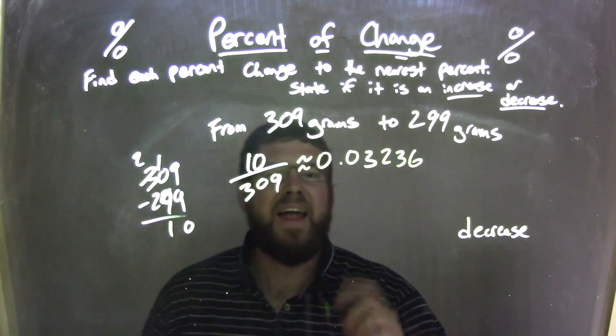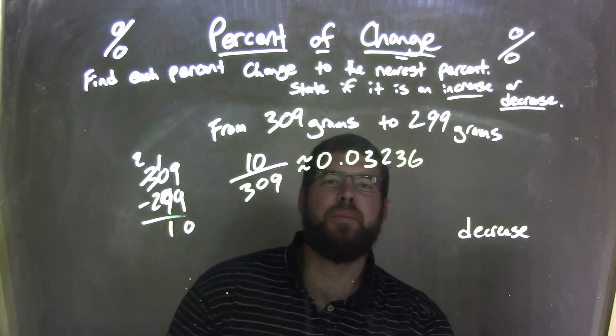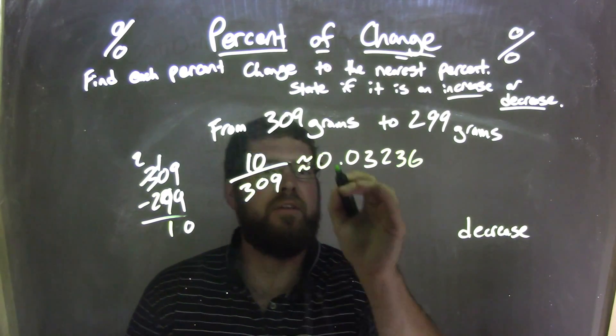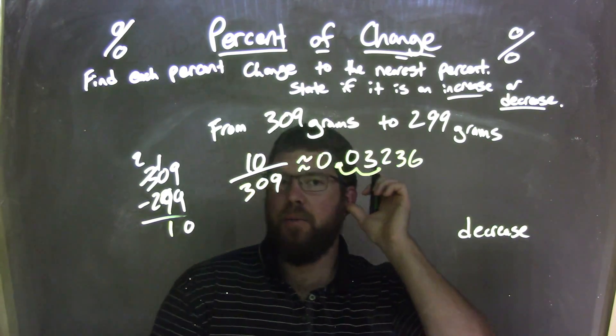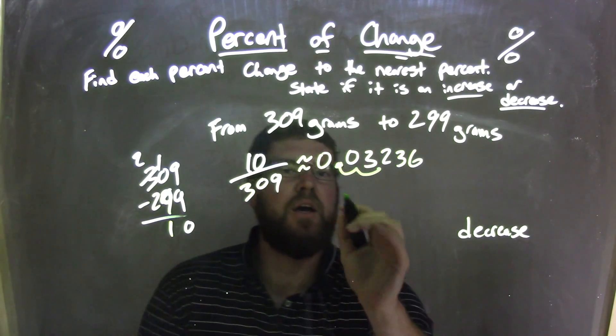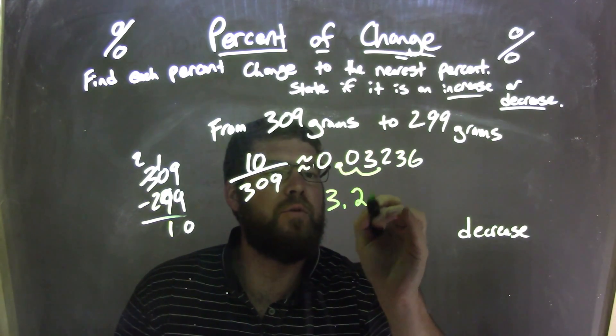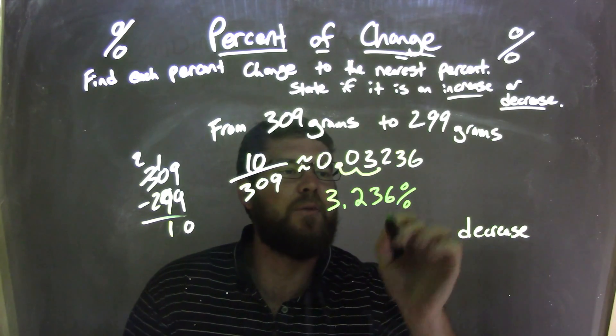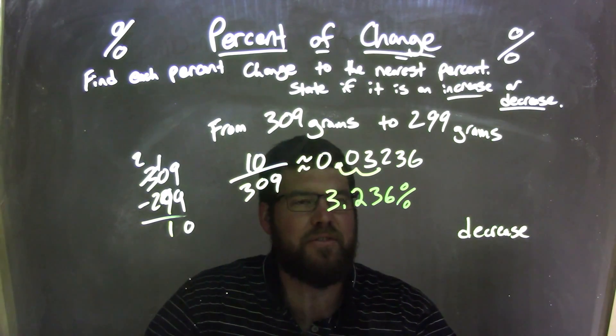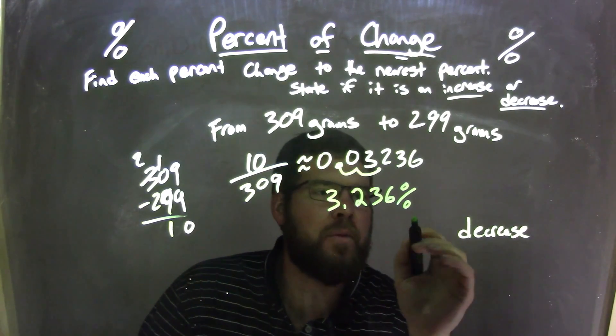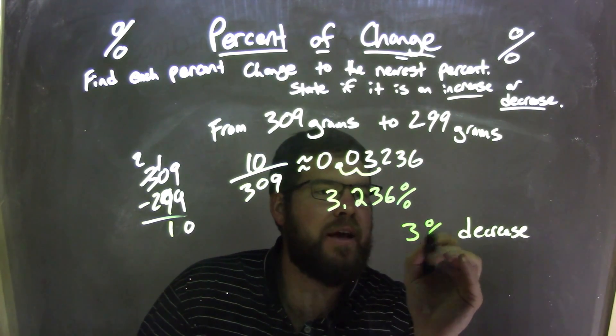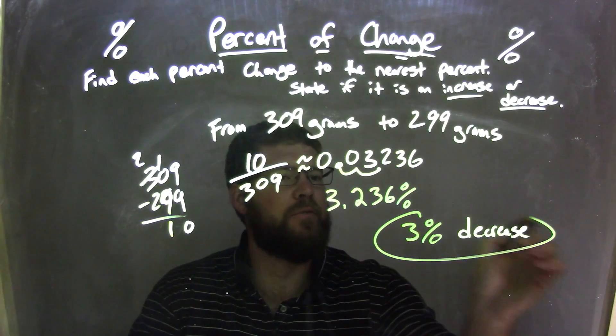Well that I need to convert to a percent. The decimal needs to convert to a percent, so we take that decimal and move it over two units, 1, 2. So now we have 3.236 percent. I can round to the nearest percent because they asked us to. Well that 0.2 causes the 3 to round down, so we're left with just a 3 percent decrease as our final answer.